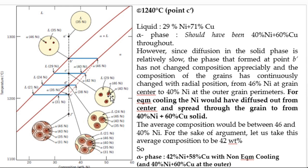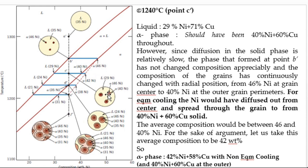The alpha phase that started solidifying earlier had 46% nickel. As temperature drops, this nickel should diffuse throughout the grain and the composition should reduce from 46% to 40%. But since it is non-equilibrium cooling, diffusion does not happen properly, and the 46% nickel at the grain center cannot diffuse throughout.